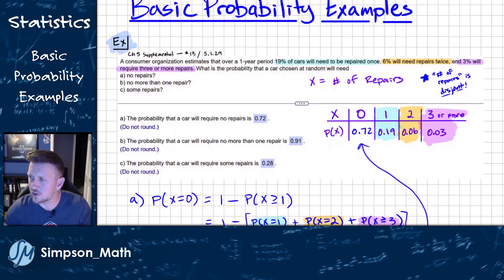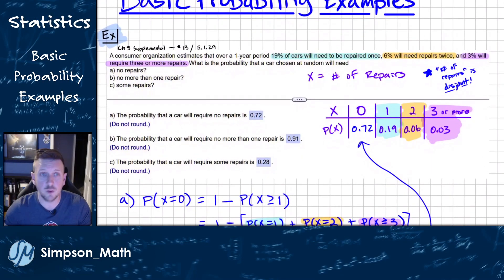So this first one says, a consumer organization estimates that over a one-year period, 19% of cars will need to be repaired once, 6% will need to be repaired twice, and 3% will require three or more repairs. What's the probability that a car chosen at random will need no repairs?